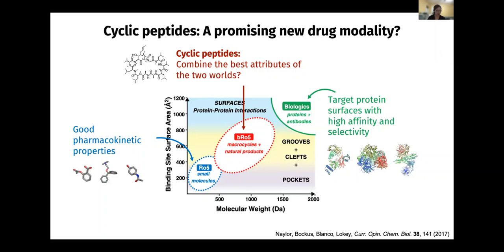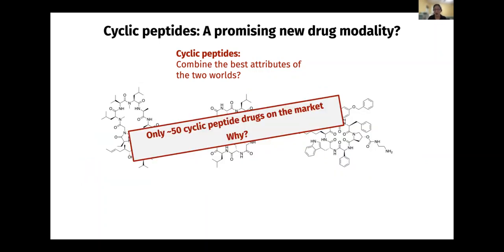This is a very optimistic thinking. As a pessimist, you might wonder: what if we combine the worst attributes of the two worlds? It turns out it is actually very difficult to realize this idea. Currently, there are only 50 cyclic peptide drugs on the market, and most of them are actually natural products or derivatives. It remains very difficult for scientists to de novo design a cyclic peptide that can target specific proteins and also be membrane permeable and orally bioavailable.